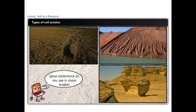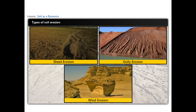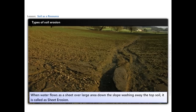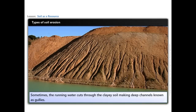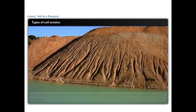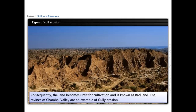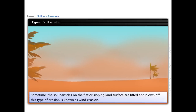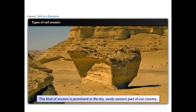There are various types of soil erosion. Sheet erosion occurs when water flows as a sheet over a large area down a slope, washing away the topsoil; it commonly occurs on recently ploughed fields or poorly consolidated soil with scant vegetative cover. Gully erosion occurs when running water cuts through clay soil making deep channels called gullies, rendering the land unfit for cultivation — known as bad land; the ravines of Chambal Valley are one such example. Wind erosion occurs when soil particles on flat or sloping surfaces are lifted and blown off; it is prominent in the dry, sandy western parts of the country.